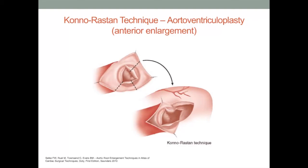In the anterior enlargement technique of the Konno-Rastan aortoventriculoplasty, the aortic root is mobilized by careful dissection anteriorly between the right coronary sinus and the pulmonary artery. This dissection is leftward of the right coronary artery and carried down to the level of the aortic annulus. The aortic root is then enlarged by an incision through the right coronary portion of the aortic annulus, near the commissure between the right and left coronary cusps. This incision may be deepened into the interventricular septum and a matching incision is thus made on the right ventricular free wall to enlarge the right ventricular outflow tract.